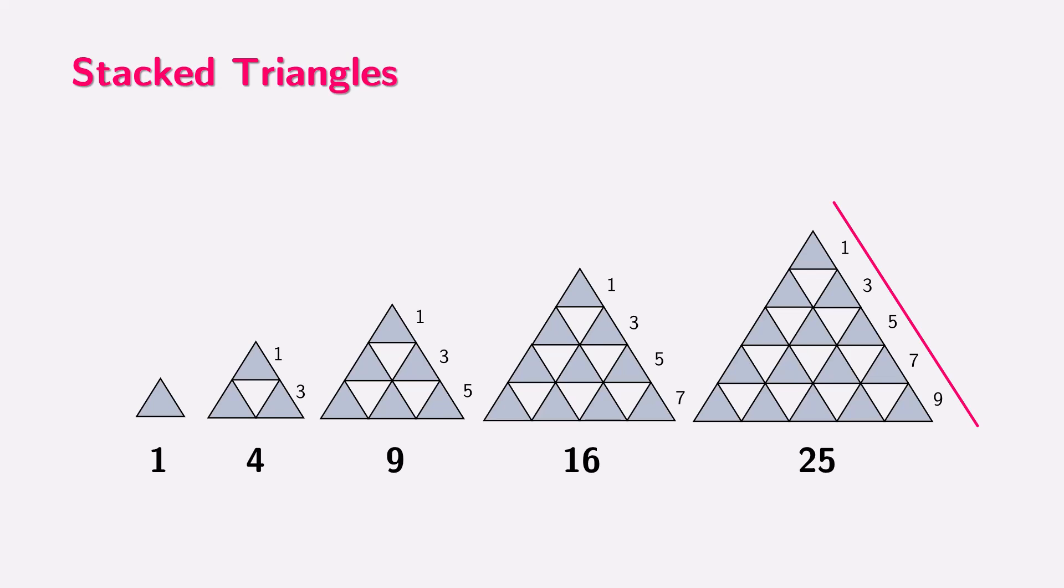One, three, five, seven, and so on. But here is something even more fascinating. The total number of triangles in each complete shape follows a square number pattern. When we have one row, we have one triangle. With two rows, we have a total of four triangles. With three rows, the total is nine triangles. And with four rows, the total becomes sixteen triangles.